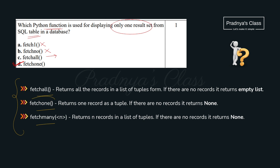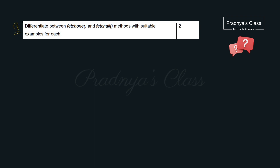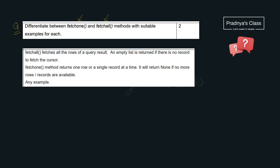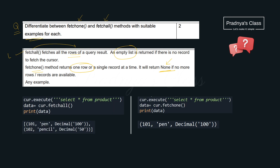We have to tell the difference between fetchone and fetchall. Here is the difference: fetchall fetches all the rows. If there are no records, we get an empty list, because fetchall returns results in the format of a list of tuples. The fetchone function returns a single row. If there are no records, it will return None. We also need to provide a suitable example. We considered a select query — when we use fetchall, we get a list of tuples as output; when we use fetchone, we get a single record in the form of a tuple.